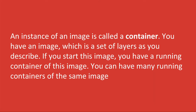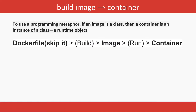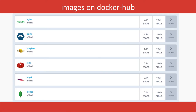You can have many containers running from the same image. For example, if you have a MySQL image you can run five different containers with different names from that image. The complete Docker flow is: start with a Dockerfile, build it to get an image, then run that image to get a container.